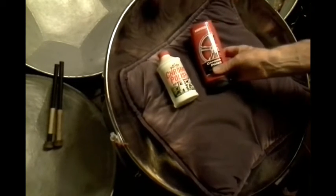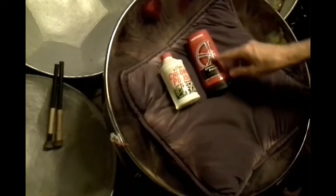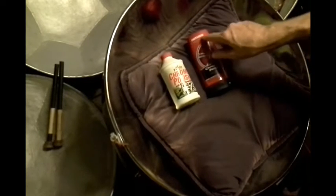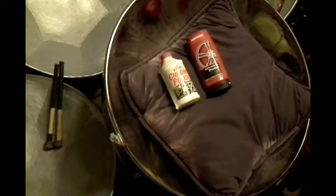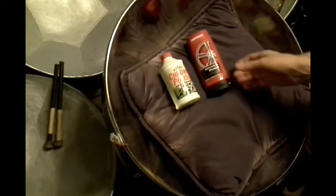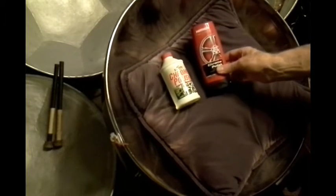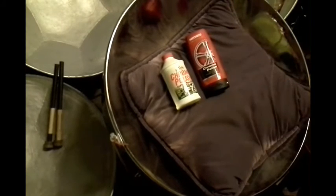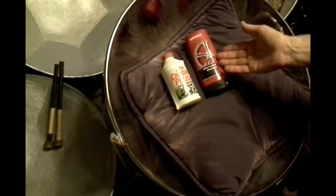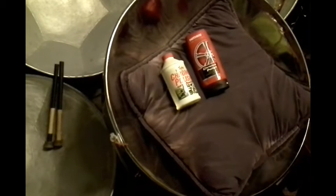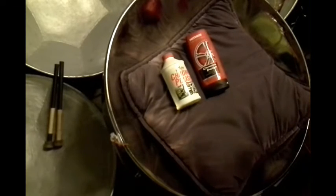And then a much better polish called Mother's, it's in the red container. This costs probably five or six dollars. It does produce a better result, although the Turtle does the job too. Mother's seems to get a much brighter shine out of your pan. And of course then you need cloth.